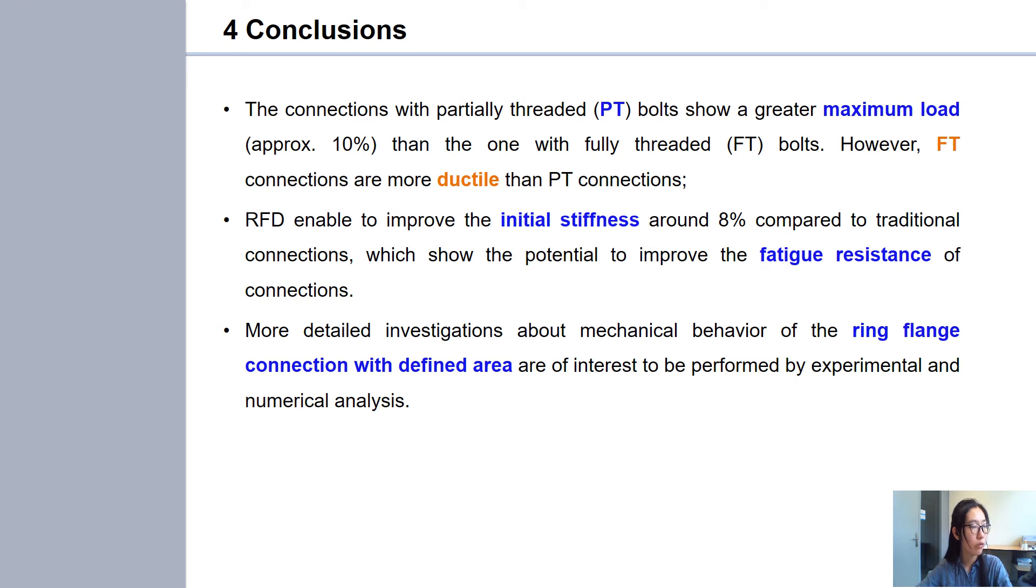Second, ring flange connections with defined surface area enable to improve the initial stiffness around 80% compared to traditional connections, which show the potential to improve the fatigue resistance of the connection.